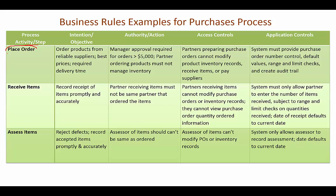We start with placing our order. The objective is to order our products from reliable suppliers for good prices and for the required delivery time. These are the key objectives for placing the order. We also have some authorization to consider — any time we have an amount greater than five thousand dollars, we need management approval.